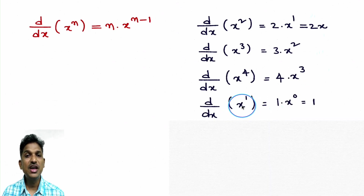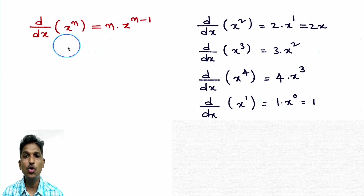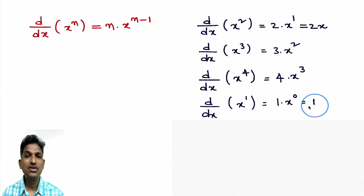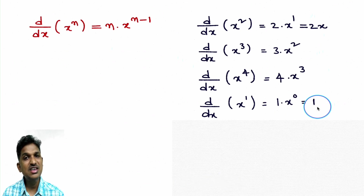Derivative of x — since x means x power 1, applying the formula: derivative of x power 1 is 1 into x power 1 minus 1, which is x power 0. x power 0 equals 1, so 1 into 1 is 1. Therefore derivative of x is 1. Please memorize this — we use it very frequently. From now onwards, d/dx of x is 1.